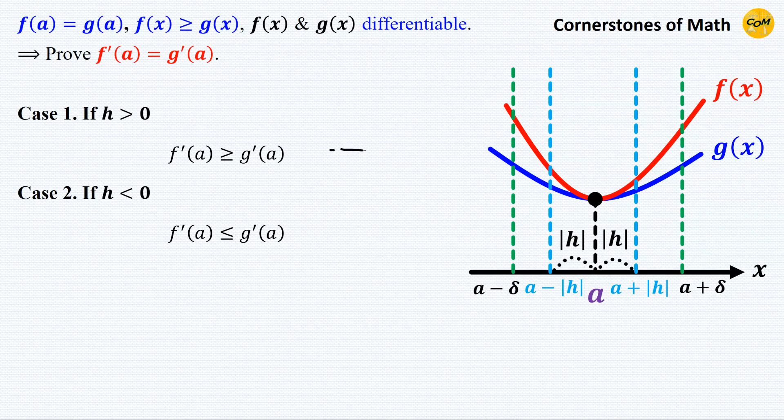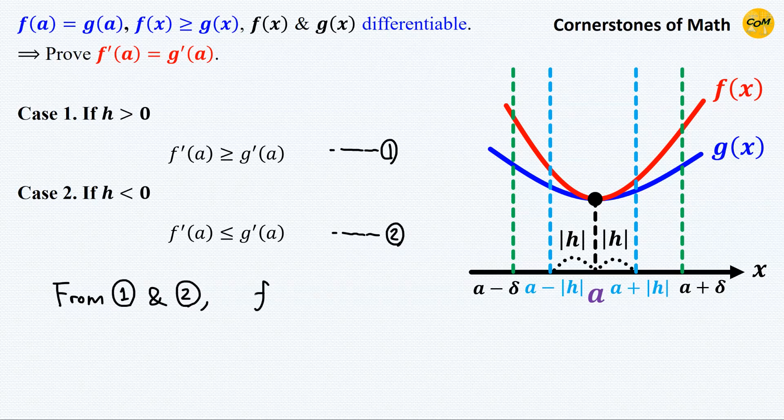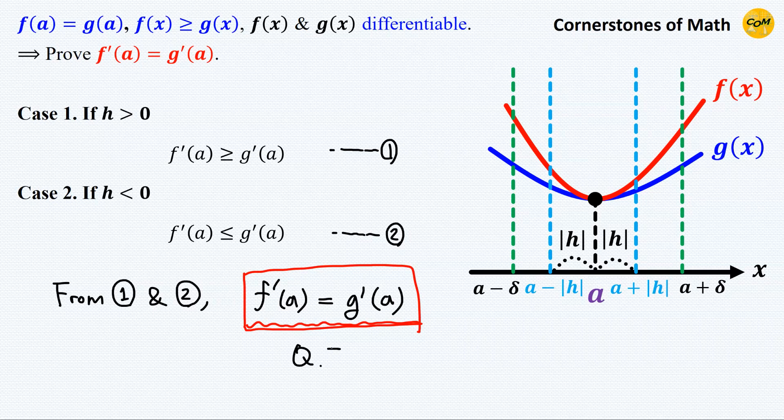So from case 1, we have obtained this. And from case 2, we have obtained this. Therefore, we have f'(a) equals g'(a). And that concludes the proof.